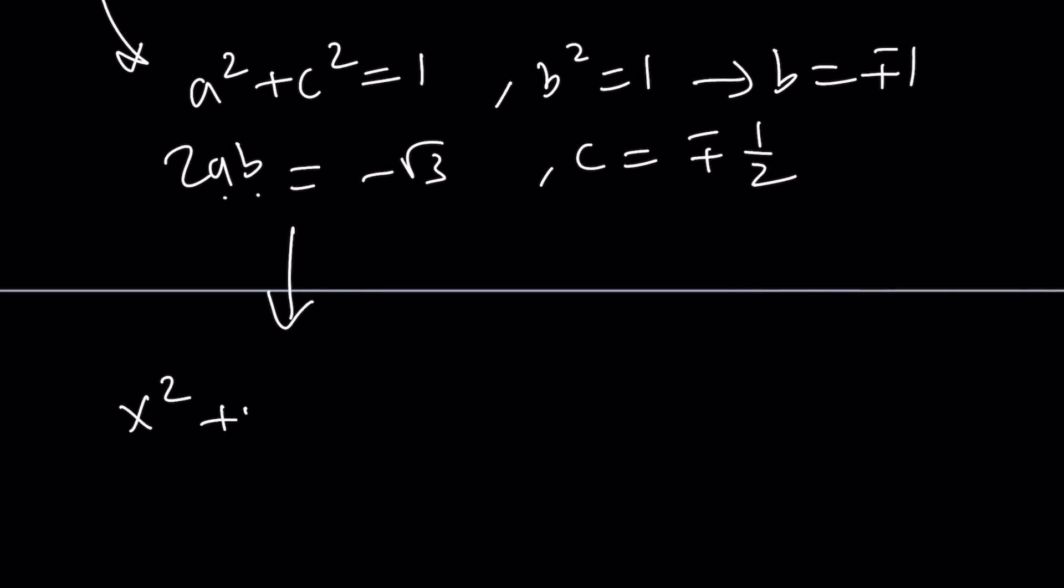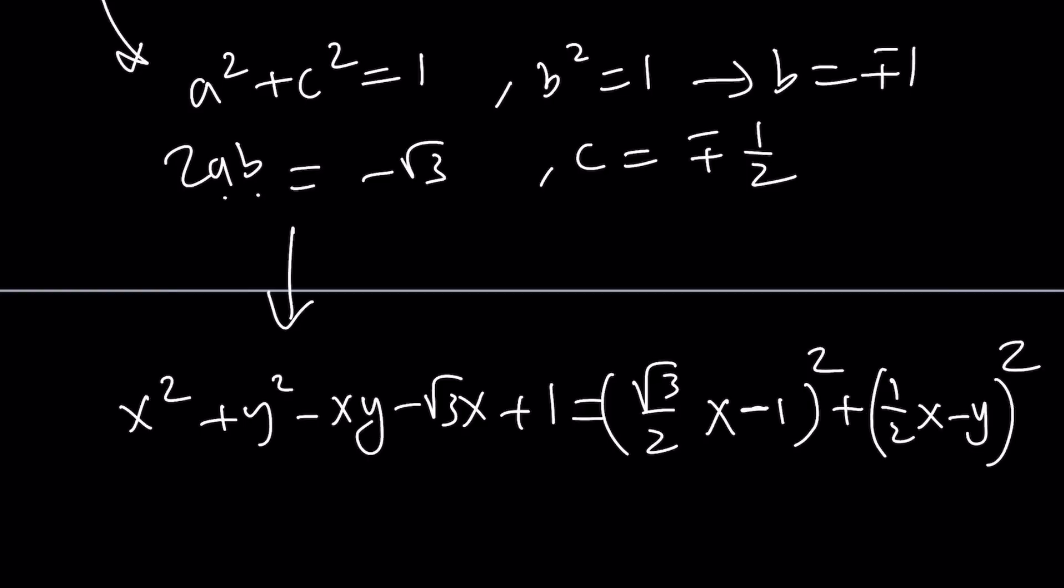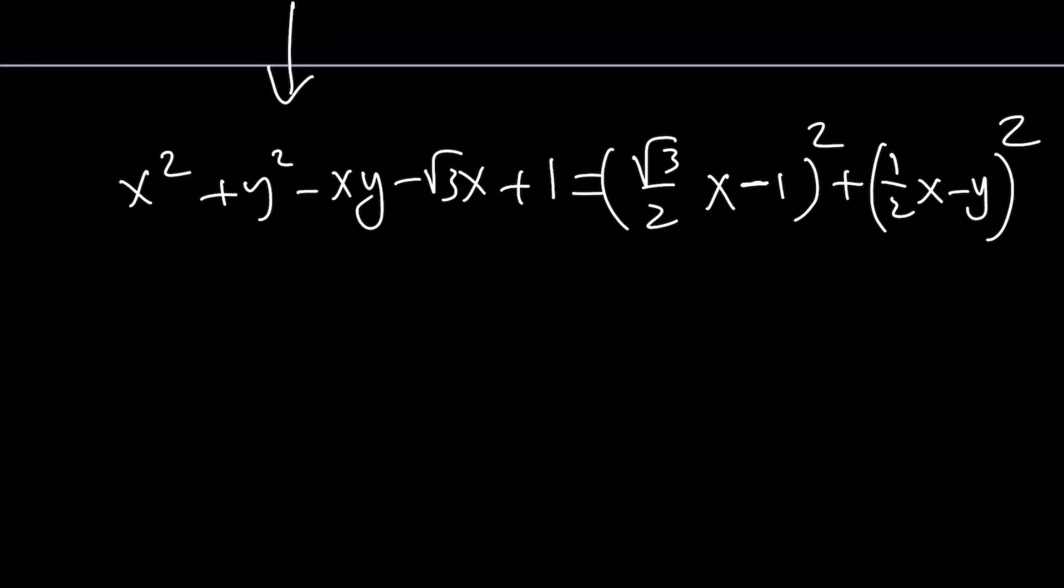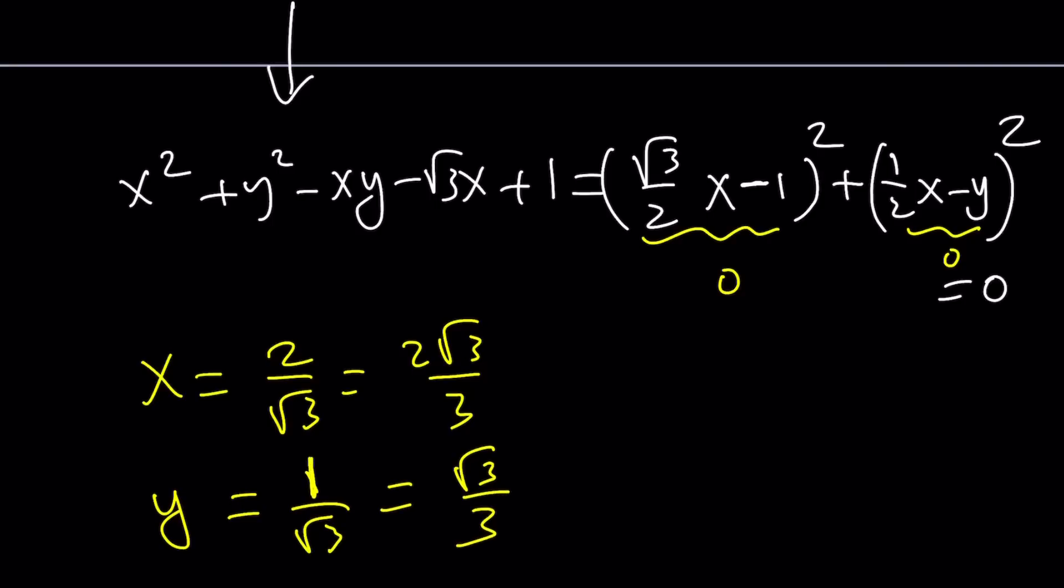Let me rewrite my expression. x squared plus y squared minus xy minus square root of 3x plus 1 is going to turn into square root of 3 over 2x minus 1 squared plus 1 half of x minus y squared. And isn't that beautiful? Something like this could turn into something like that. It's amazing. Since this is equal to 0, we're going to set each term equal to 0, and we're going to get the following: x equals 2 over root 3, which you can write as 2 root 3 over 3, and y equals 1 over root 3, which can be written as root 3 over 3. And this concludes the first method.